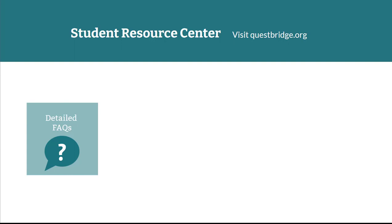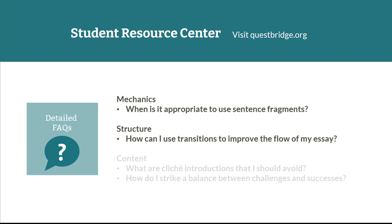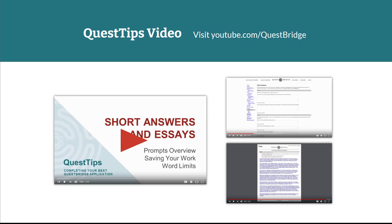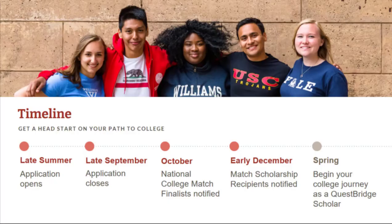Another important section we encourage you to check out is the detailed FAQ section, which is broken up into three parts: mechanics, structure, and content. Lastly, another resource we recommend is our Quest Tips video — there's one specifically on the writing section for your short answers and essays. You can find more practical assistance there, including help with some of the more technical parts of the application if you're having questions or difficulties.